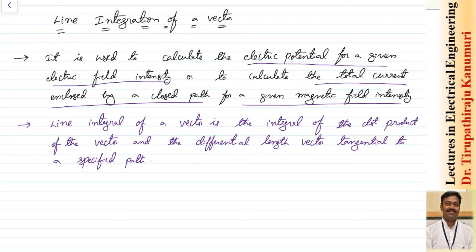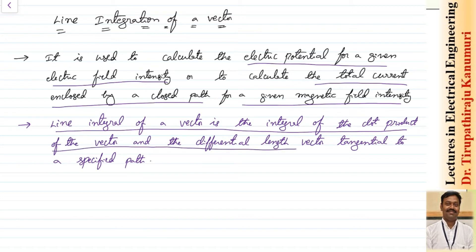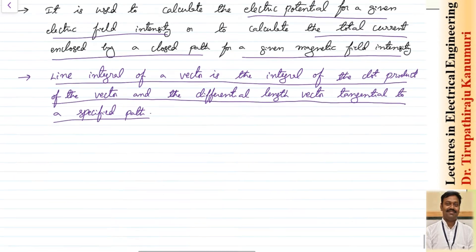What is a line integral? The line integral of a vector is the integral of the dot product of the vector and the differential length vector tangential to a specified path. This is the definition.